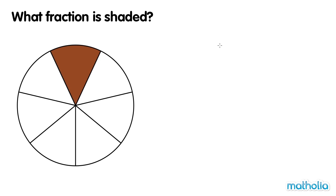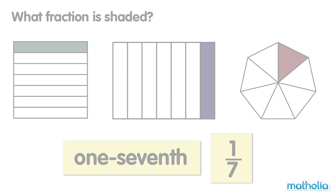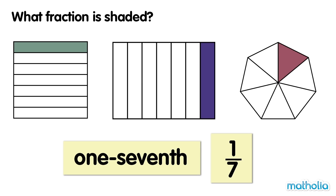One sixth. One seventh of the circle is shaded. One seventh. One seventh of these shapes are shaded.